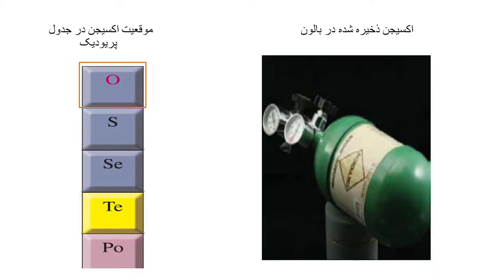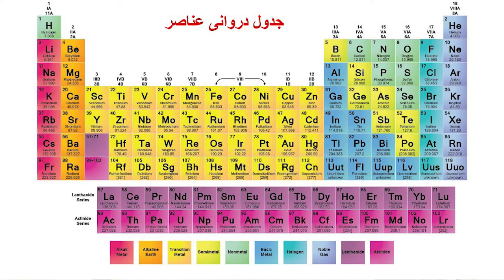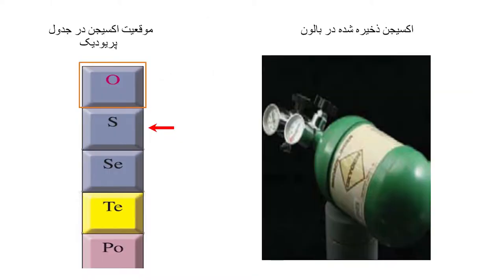Now, if we use oxygen in a period of time, we can group it with sulfur, selenium, tellurium, and polonium.